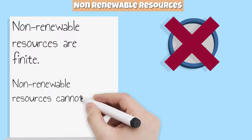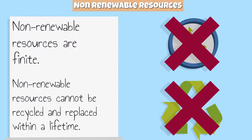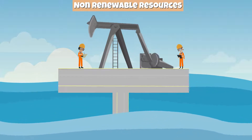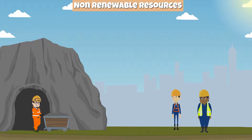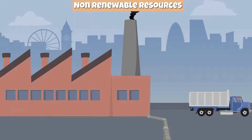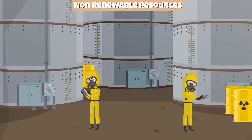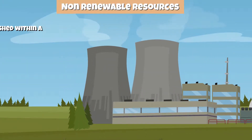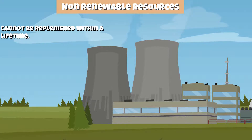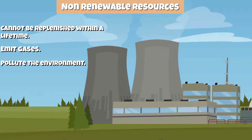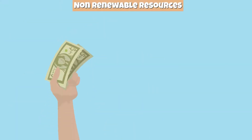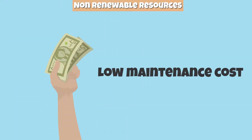Non-renewable resources cannot be recycled and replaced within a lifetime. Some examples of non-renewable resources include oil, coal, natural gas, and nuclear energy. Non-renewable resources cannot be replenished within a lifetime. They emit gases, pollute the environment, and can be produced in mass quantities. Non-renewable resources have a low maintenance cost.